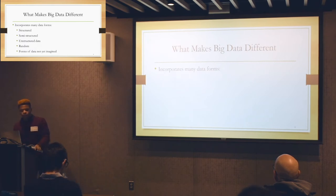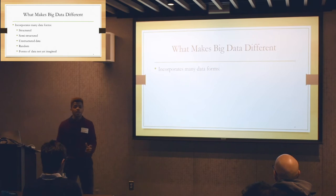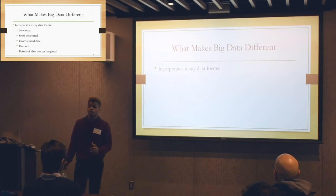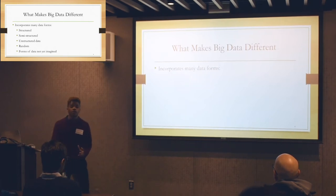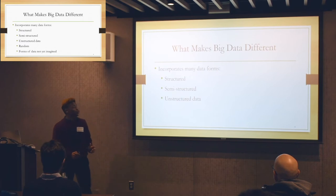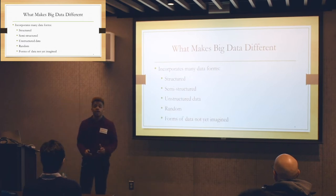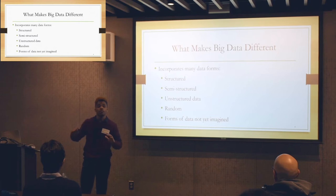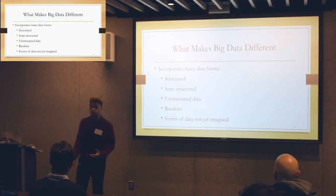So what makes big data different? Something that makes it different is that it incorporates many different forms of data, including structured data, semi-structured, unstructured data, random data, and many forms of data that at the moment we have no idea where it will come from or what it will look like.